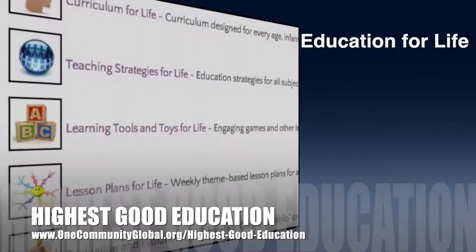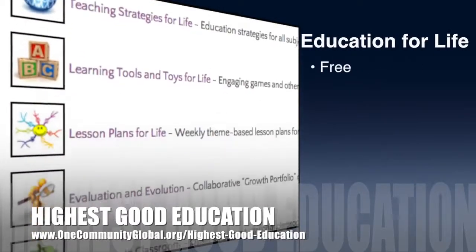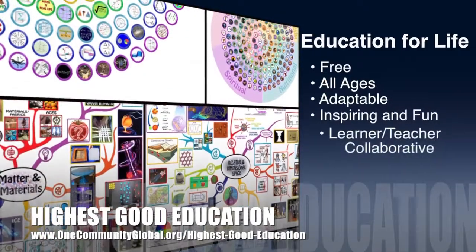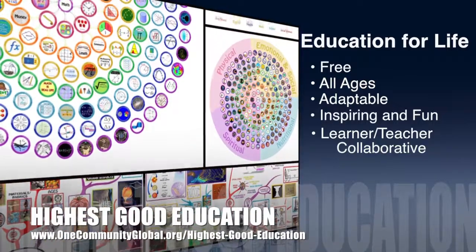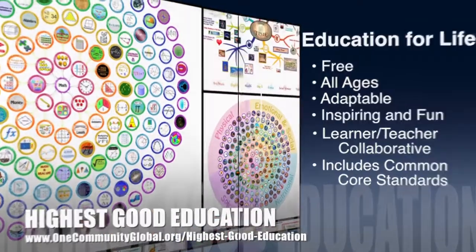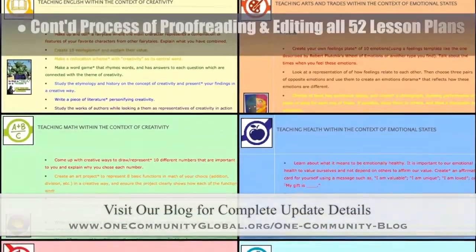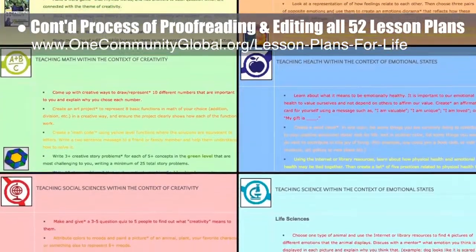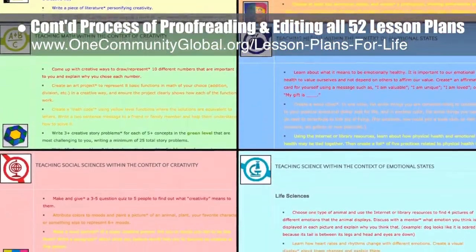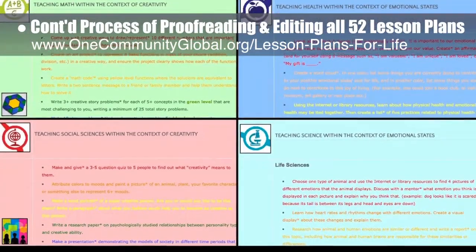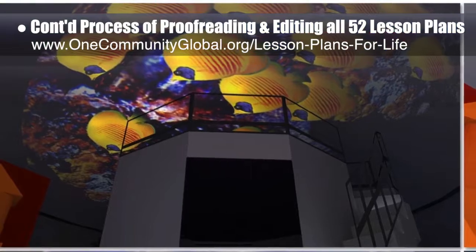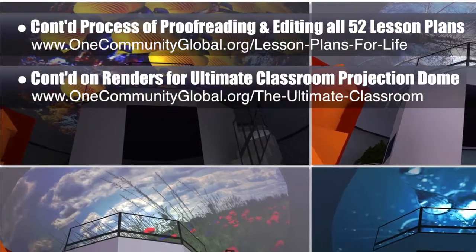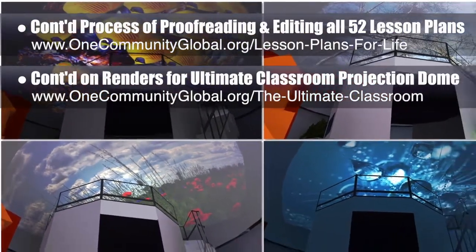One Community's approach to highest good education is open source and free shared, designed for all age groups, adaptable to any schooling environment, inspiring and fun for all participants, a learner-teacher collaborative, and includes U.S. common core standards. This week, the core team continued the process of final proofreading and editing of all 52 lesson plans. We completed the creativity lesson plan and the emotional states lesson plan, bringing us to 26 of 52 finished — 50% completion. We also continued working on the renders for the ultimate classroom projection dome feature, using a different viewpoint for rendering and applying several different projected images.